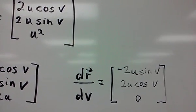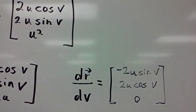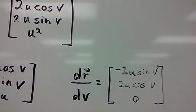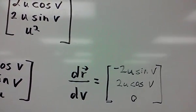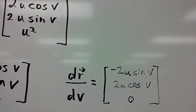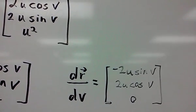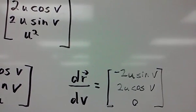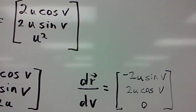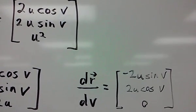The derivative of cosine being negative sine, and the derivative of sine being positive cosine. And so you get negative 2u sine v, 2u cosine v, and since we're taking the derivative of u squared with respect to v, which is not present in that equation, it's going to be zero.